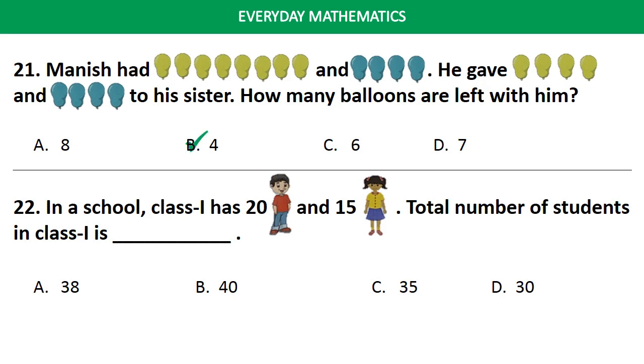Question No. 22. In a school, class 1 has 20 boys and 15 girls. Total number of students in class 1 is? Answer is Option C. 35.